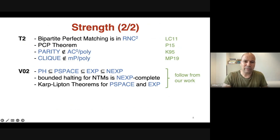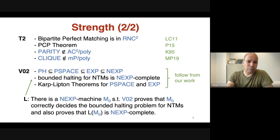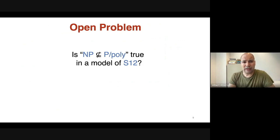V⁰₂ can prove things like: the polynomial hierarchy is included in PSPACE, which is included in NEXT, which is included in NEXP — this linear structure of complexity classes is provable within V⁰₂. Another thing V⁰₂ can prove, which follows from our work, is that the bounded halting problem for non-deterministic Turing machines is NEXP-complete. Specifically, there is a standard machine M₀ such that V⁰₂ proves M₀ correctly decides the bounded halting problem, and that its language is NEXP-complete under polynomial-time reductions.